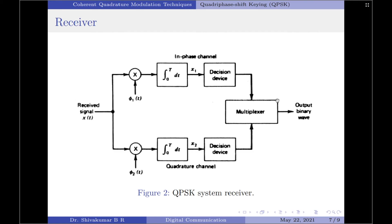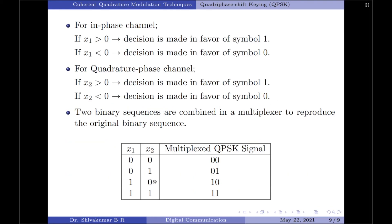Let us see how this multiplexing is made. Here, I have shown a small table to indicate the same. X1 represents the output of the in-phase channel. X2 represents the output of the quadrature phase channel. If X1 and X2 are both 0, 0, then the multiplexed QPSK signal is 00.